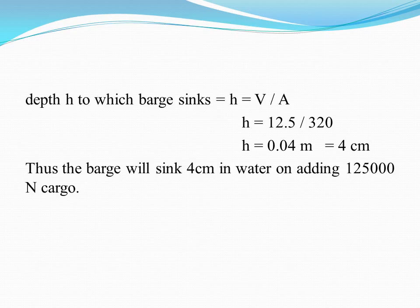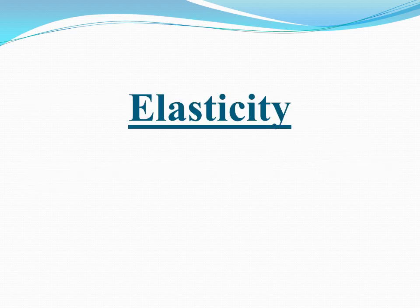To find the depth, we use h = V / A. Substituting the volume and area, we get h = 12.5 / 320 = 0.05 m, which is 4 centimeters. So the barge will sink 4 cm in water on adding 1,25,000 N of cargo.